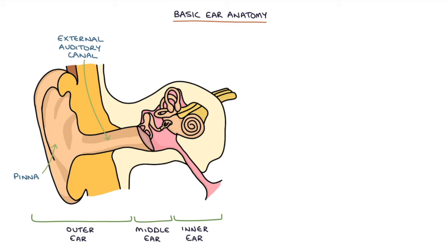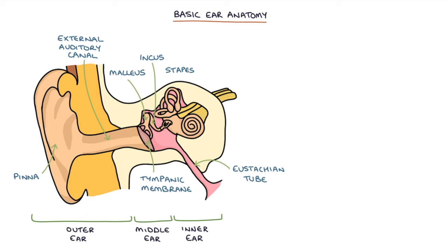The tympanic membrane is the eardrum. The Eustachian tube connects the middle ear to the throat to equalize the pressure in the middle ear. The malleus, incus and stapes are the small bones in the middle ear that connect the tympanic membrane to the structures of the inner ear.